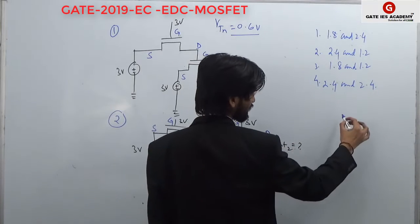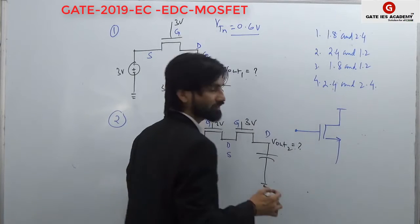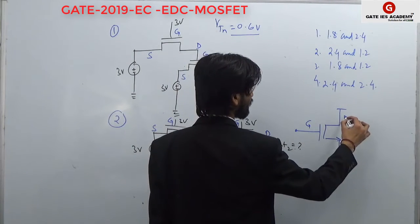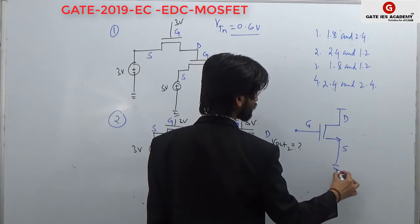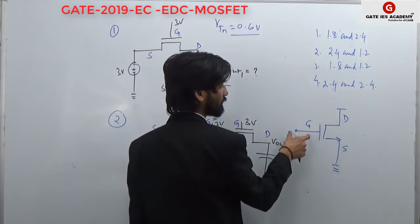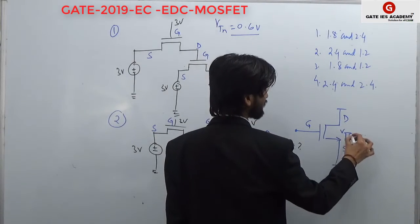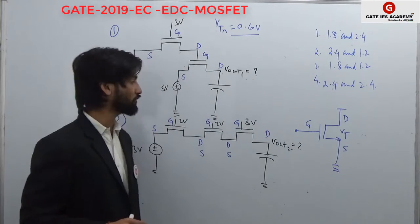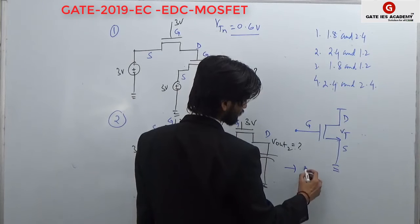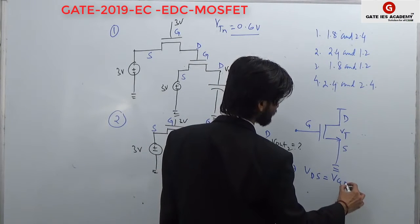Let us take one separate NMOS transistor. This is gate, this is drain, and this is source. So what can be the maximum output here if we are applying some input? If threshold voltage is Vt, we know from the fundamental: if I talk about Vds, Vds must be Vgs minus Vt.